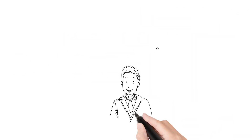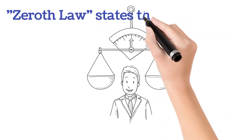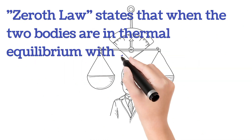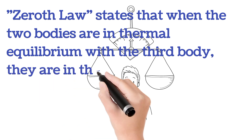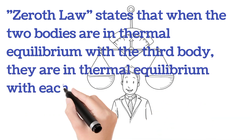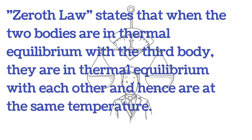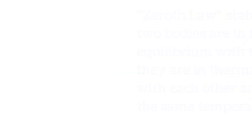Zeroth law: states that when two bodies are in thermal equilibrium with a third body, they are in thermal equilibrium with each other and hence are at the same temperature.